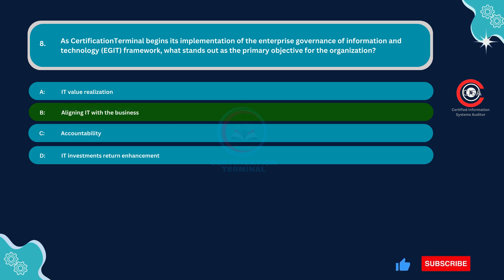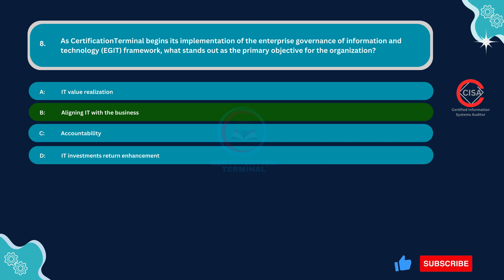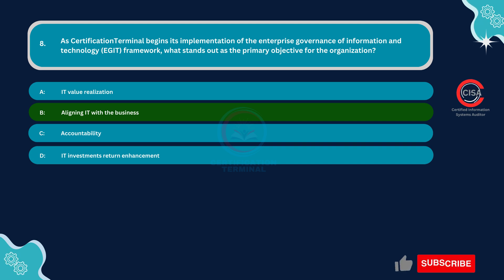Aligning IT with the business is often considered the primary objective of implementing an enterprise governance framework such as EGIT. By aligning IT initiatives, strategies, and investments with the overall business objectives and priorities, organizations can ensure that IT functions as an enabler for achieving business goals.